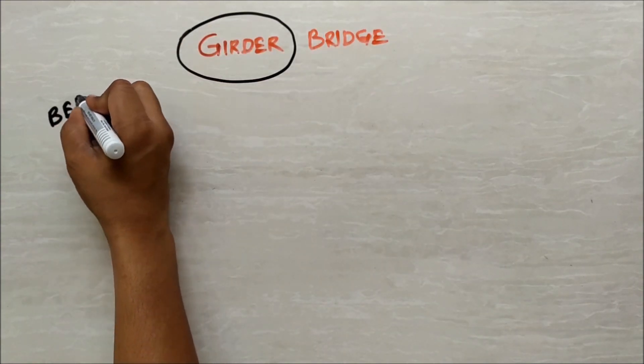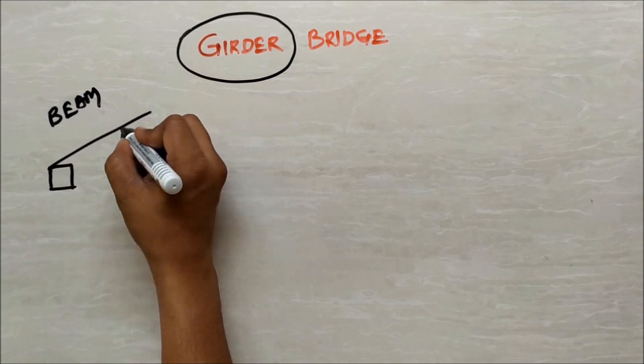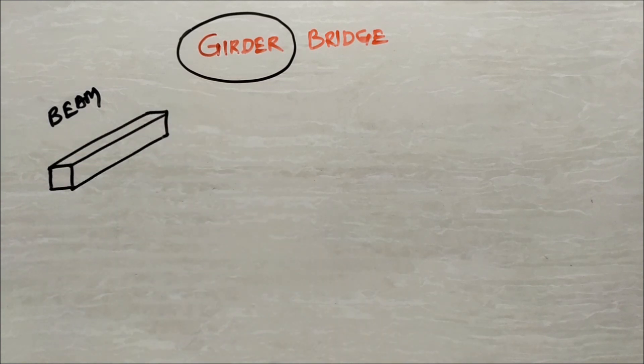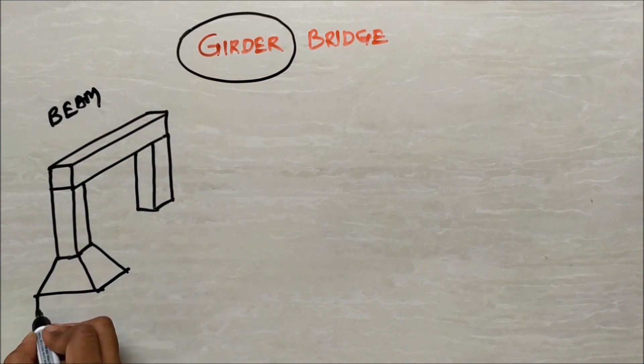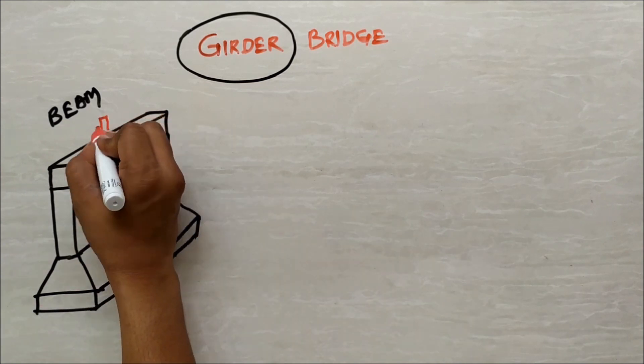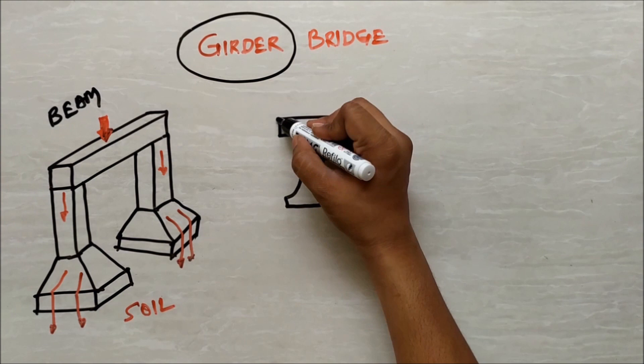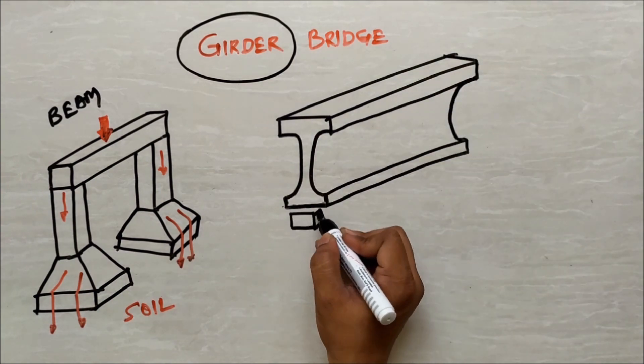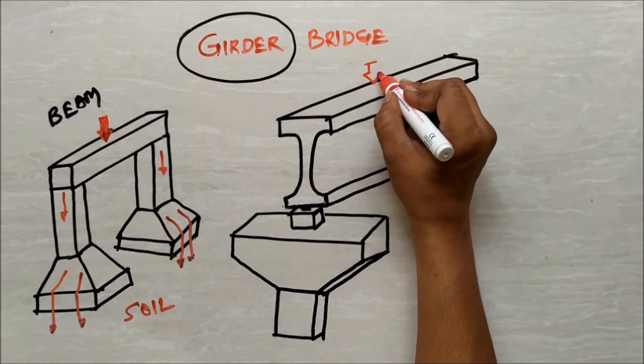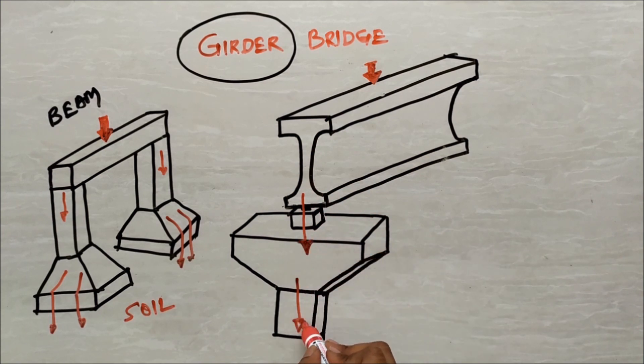What is girder? Girder is a type of a large beam. We know beam is a horizontal member of a structure used to carry vertical load and transfer the load to column, then footing, then soil. Girder is also a large horizontal member of a structure to carry heavy loads and transfer the load to bearing, then substructure.